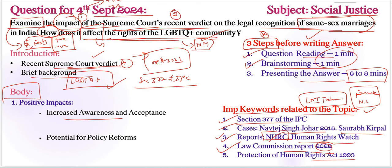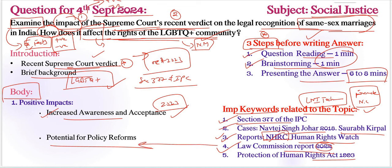Following the Supreme Court's recent verdict, increased awareness and acceptance is a very positive impact. For example, a Pew Research Center survey in 2023 showed a noticeable shift in public attitudes toward LGBTQ+ communities, with a growing number supporting their rights. Additionally, potential for policy reforms is important — the Law Commission Report 2022 had already recommended a review of personal laws to include same-sex unions, which may gain traction following this verdict.